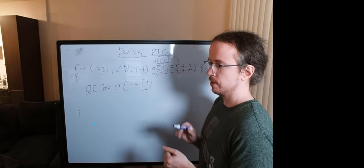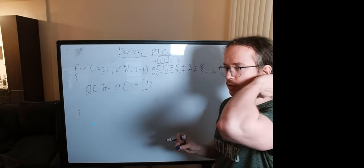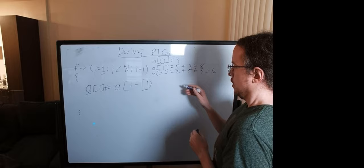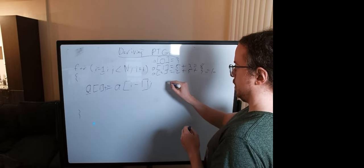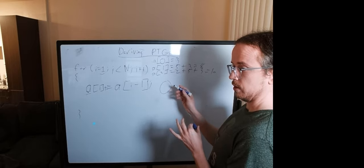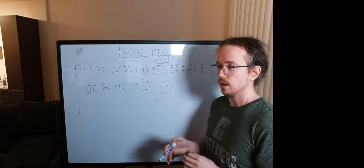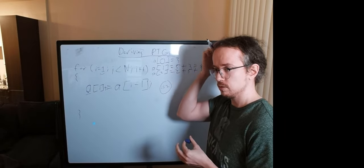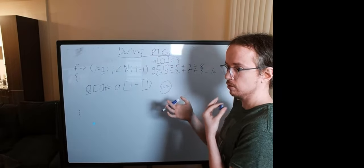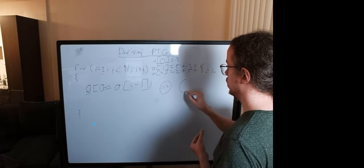So this is a very simple program. It's a little bit of a toy example, but it's a good one to start with. If we have a node in our parallel task graph, and we call this node i equals two, to compute i equals two, we really depend on the value of i equals one.